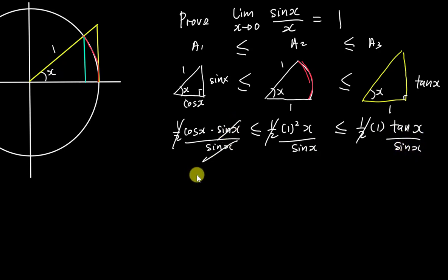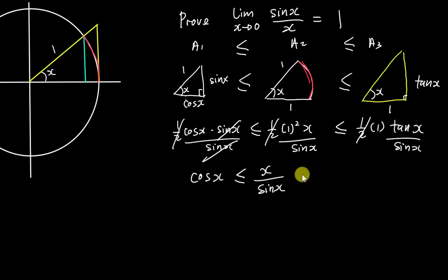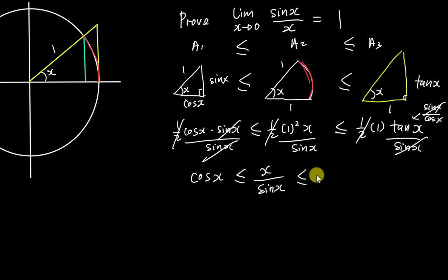After dividing by sin(x): the first term simplifies to cos(x), the middle term gives x/sin(x) — which is close to what I want but I need sin(x)/x — and the last term gives tan(x)/sin(x). Since tan(x) = sin(x)/cos(x), the sin(x) cancels and that term becomes 1/cos(x).